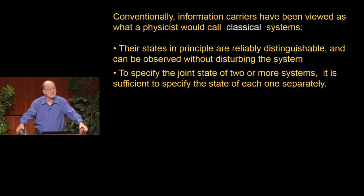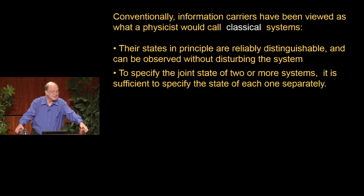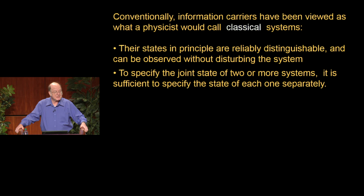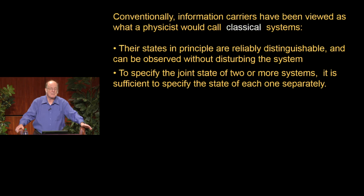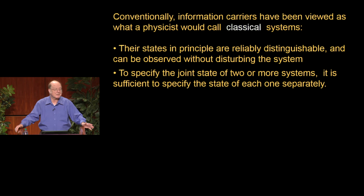Classical systems are ones whose states are, in principle, reliably distinguishable, and you can read the state of something without disturbing it. And it was so fundamental an idea that nobody even thought of saying it: to thoroughly describe two things, it suffices to describe each one separately.